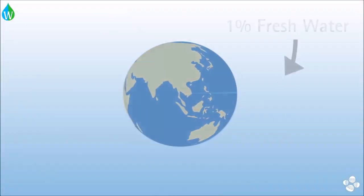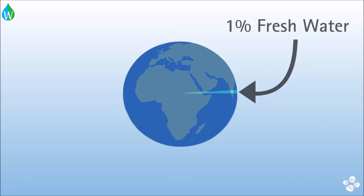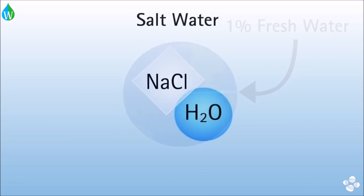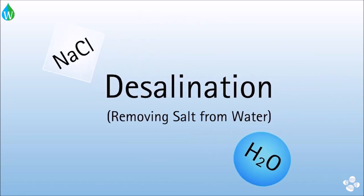However, less than 1% of all water on Earth is accessible freshwater. For our global population to continue to develop and thrive, we need to turn the abundant ocean saltwater into freshwater, and we do this through desalination.